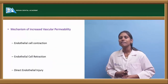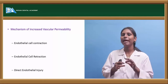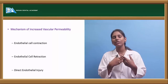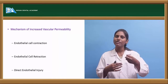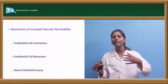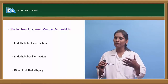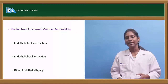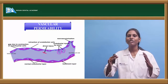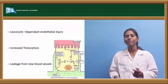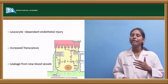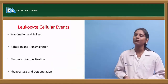The mechanisms of increased vascular permeability include: direct injury causing endothelial cell contraction and retraction, leading to a leaky endothelial wall that allows intravascular fluid to move into extravascular spaces. This is followed by direct endothelial injury — through polymorphonuclear cells — causing gaps between endothelial cells, or the endothelial cells themselves being killed. Additionally, there is leukocyte-dependent endothelial cell injury, increased transcytosis, and leakage from new blood vessels.